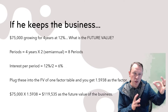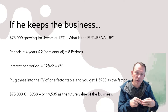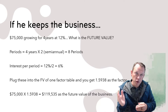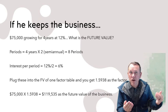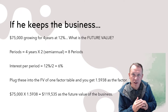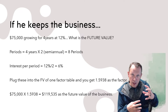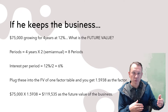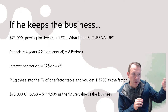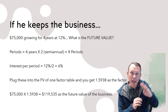We're going to use the factor tables to solve this, so we need the periods and the interest per period — those get plugged into the factor tables to give us a factor to multiply our current value by. For periods: we have four years with semi-annual compounding, meaning twice a year, so that's four times two — eight periods.